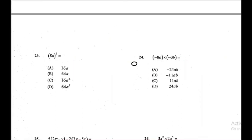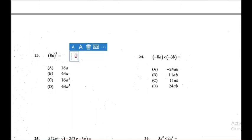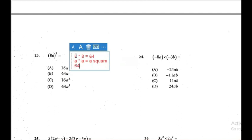Question 23: (8a) squared. Remember that both the a and the 8 are squared since they're both inside the bracket. So it is 8 times 8, which is 64, and A times A gives us A squared. Our answer is 64A squared, which is D.